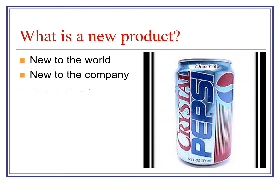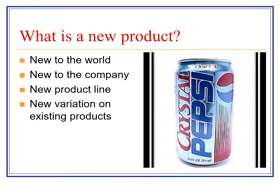Or it could be a new product line — something added to an existing range. Or it can be a new variation of an existing product, and that's why we have Crystal Pepsi here — basically see-through Pepsi. It didn't catch on because people associate that appearance with lemonade, so getting a taste of Pepsi from something that looks like lemonade was too difficult. A lot of products fall into this category: a variation in size, flavor, and so on.